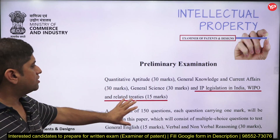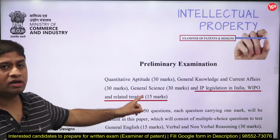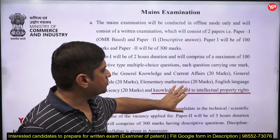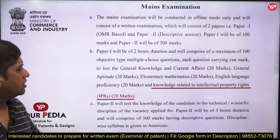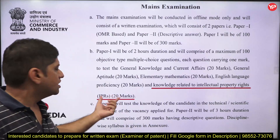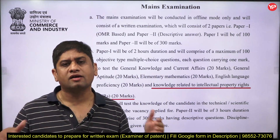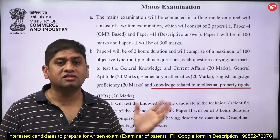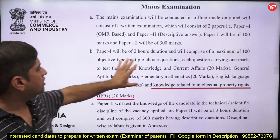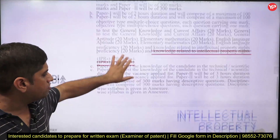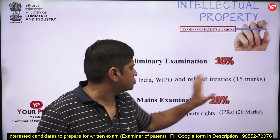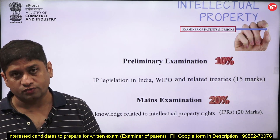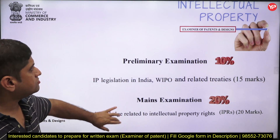15 marks out of 150 are in the preliminary from IPR — that means 10 percent of the syllabus. When we come to mains, there is Paper 1 and Paper 2. In Paper 1 they have given syllabus on knowledge related to Intellectual Property Rights. That is 20 marks out of 100, which is 20 percent. So 15 marks out of 150 — 10 percent in prelim — and 20 percent in mains. And one more thing: it can also be part of your interview. So this is the contribution of this particular topic.